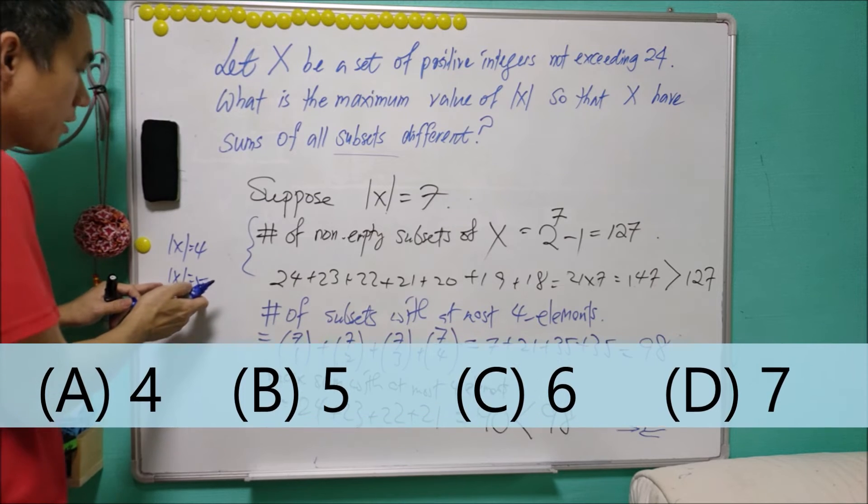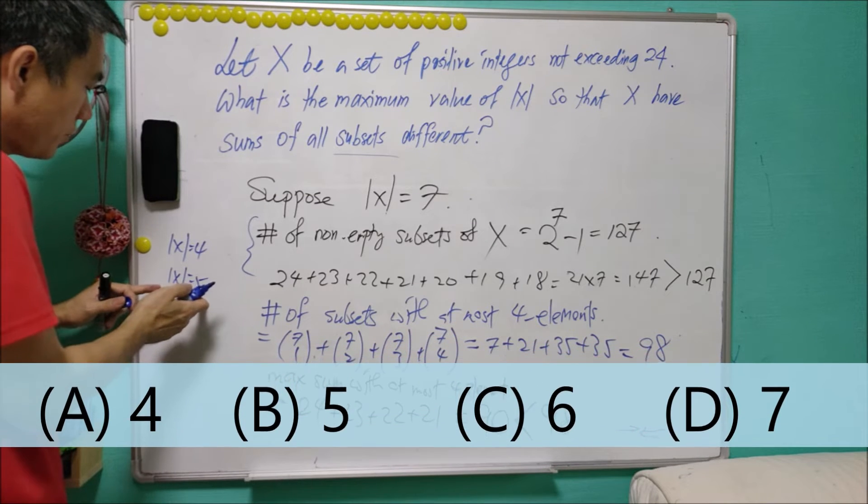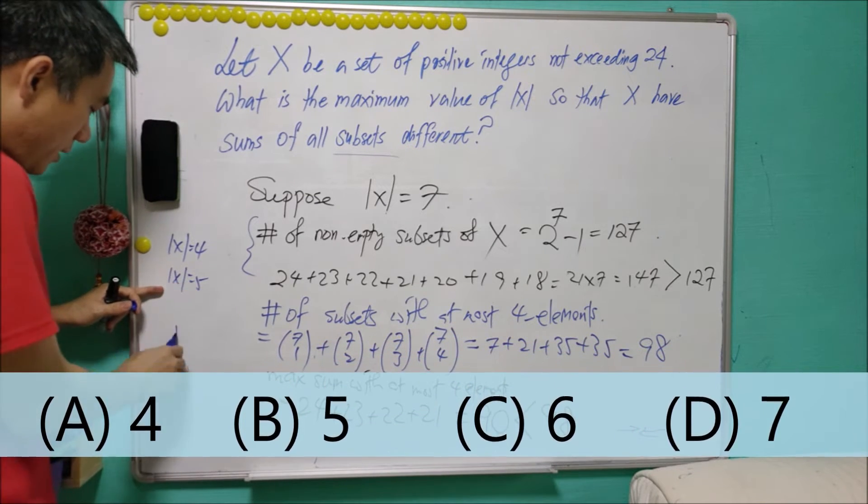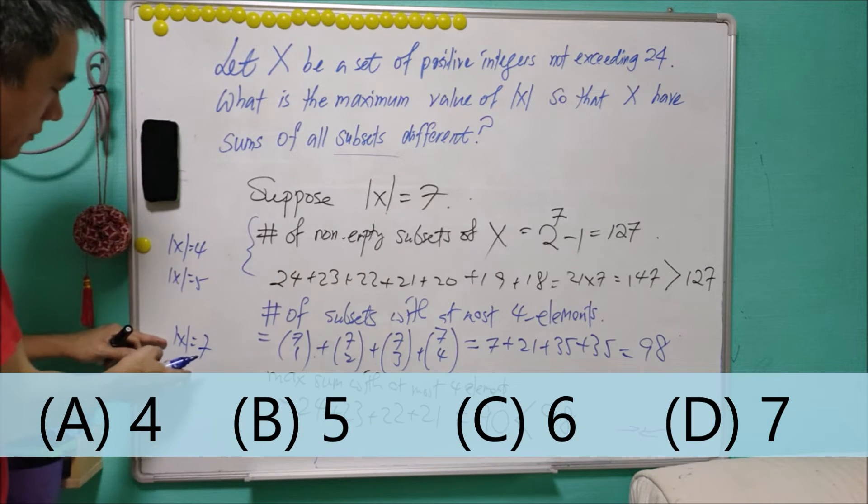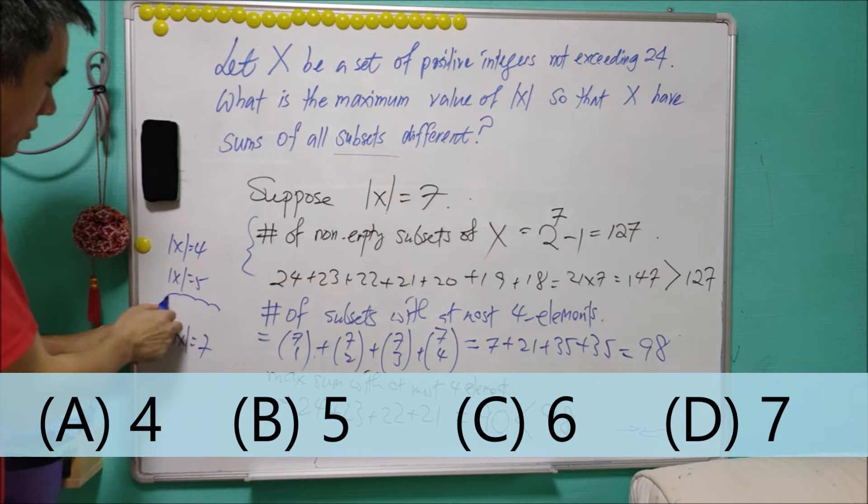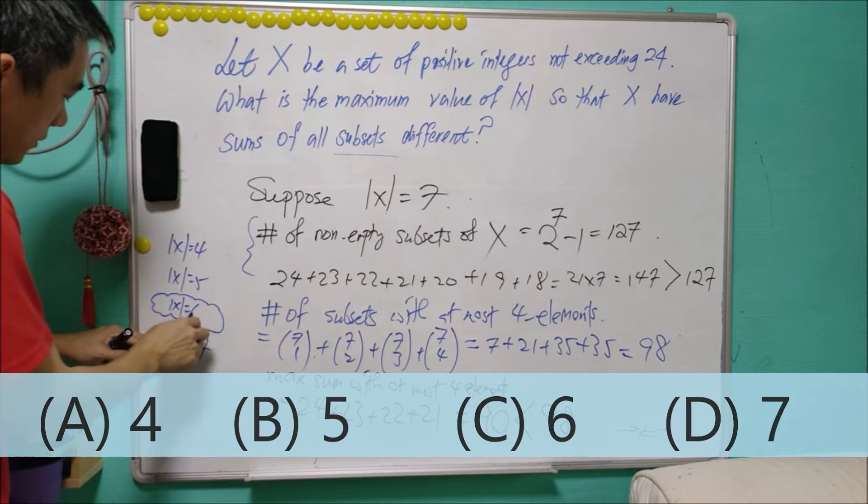When it goes to 5, it is good because it satisfies the condition. But we do not know whether this is maximum. But now we confirm that 7 is not good because it cannot satisfy the condition. Now, the main question right now is, how about 6?